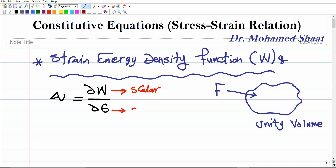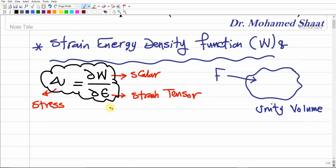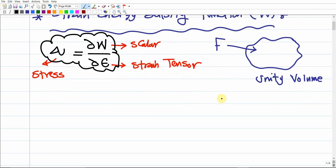Note that W is a scalar field — it has only magnitude and no direction. The strain tensor ε and the stress tensor σ are both second-order tensors. So this is the general relation: stress is the partial derivative of the strain energy function, describing how the strain energy changes over the strain.